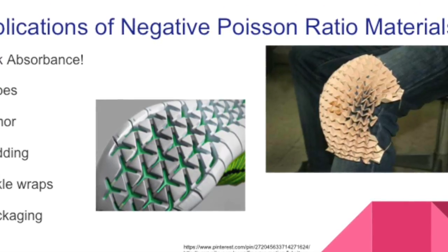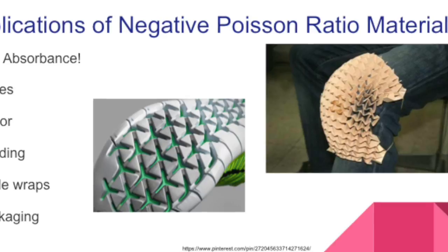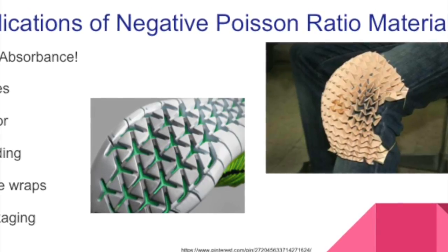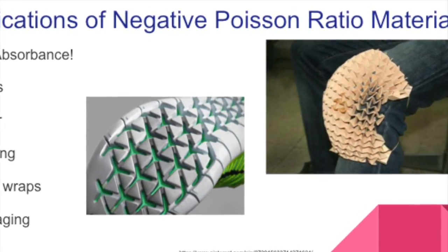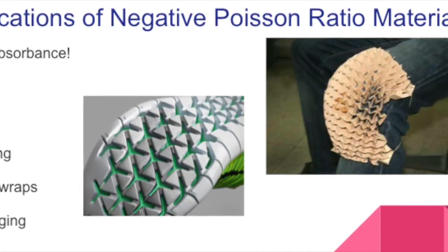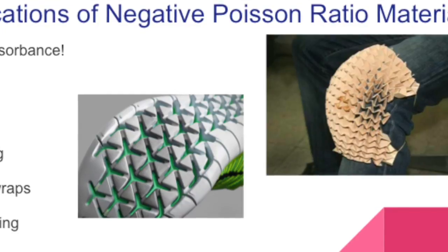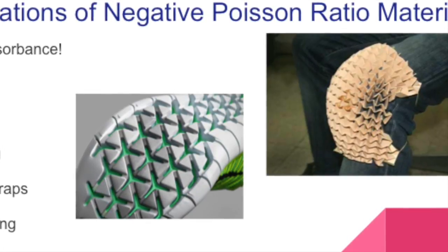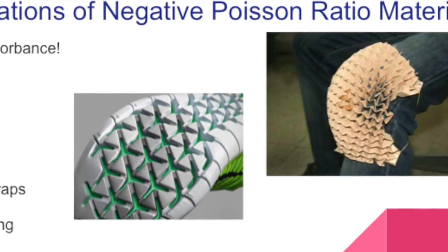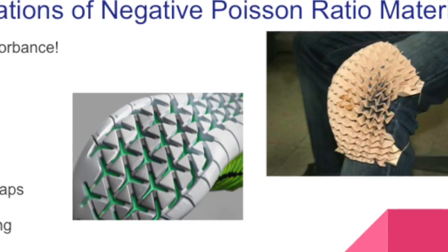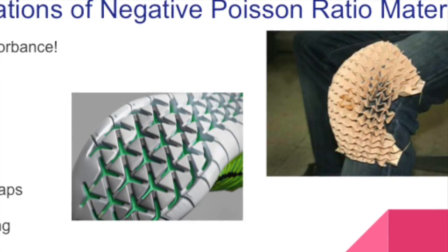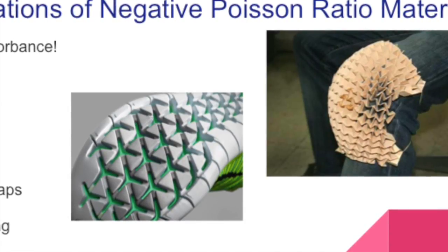These materials are currently used in shoes. While running, a person experiences a lot of stress in the knee and ankle joints. To combat this, shock absorbing materials are used in the sole of the shoe. This new style of Nike shoes utilizes negative Poisson's Ratio materials to allow the shoe to expand with the foot as it impacts the ground, resulting in improved comfort for the runner.